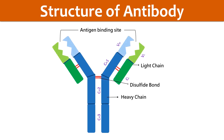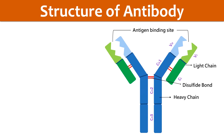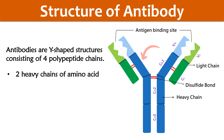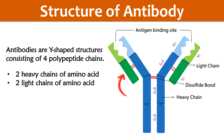Let's understand the structure of antibodies. Antibodies are Y-shaped structures consisting of four polypeptide chains — two heavy chains of amino acids and two light chains of amino acids. The blue color chain represents the heavy chain and the green color chain represents the light chain. Each chain has two regions: variable region and constant region, denoted with the letters V and C.